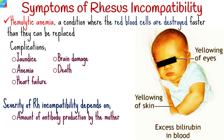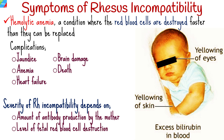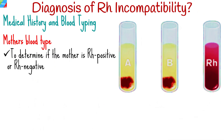The severity of Rh incompatibility largely depends on the amount of antibody production by the mother and the level of fetal red blood cell destruction. Diagnosing Rh incompatibility begins with obtaining the pregnant woman's medical history, including her blood type to determine if she is Rh positive or Rh negative, which can highlight potential Rh incompatibility issues.